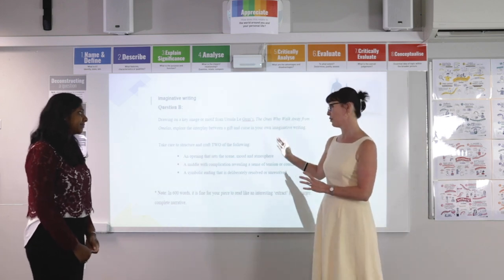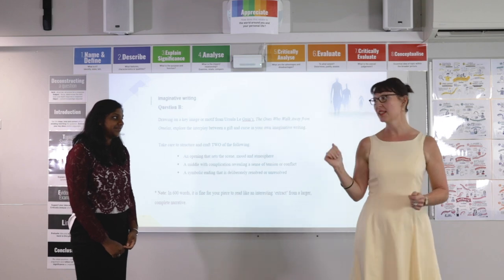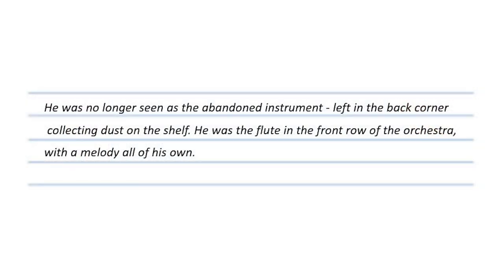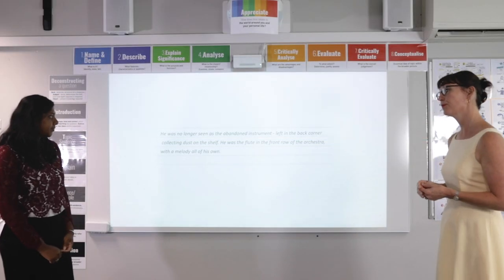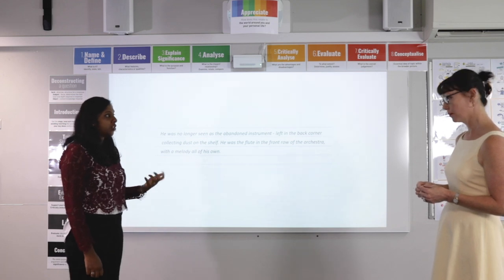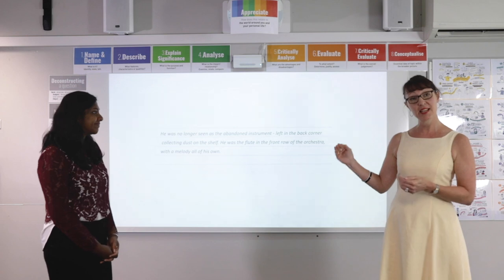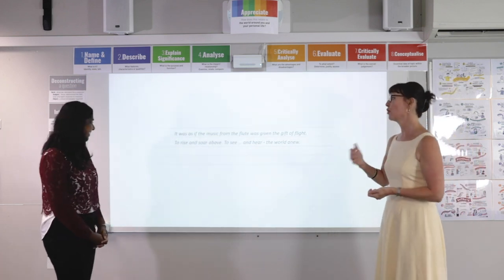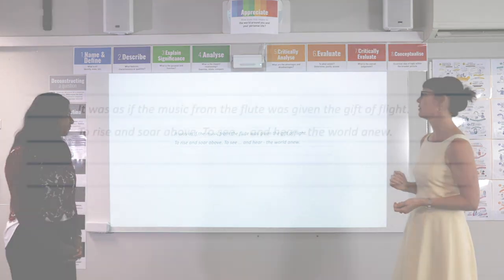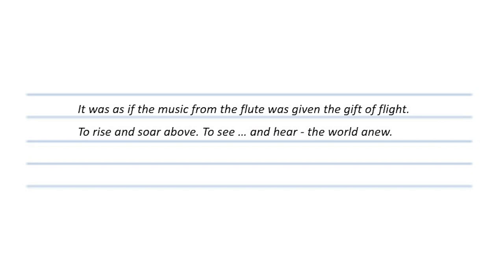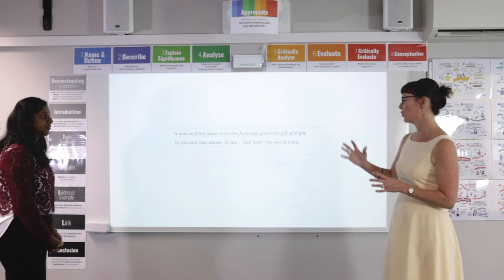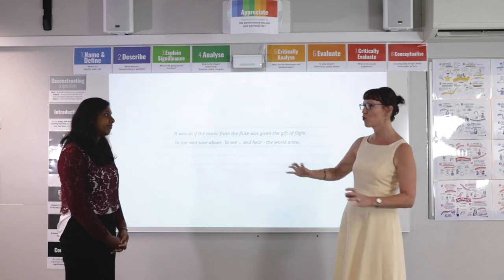To weave that in and draw out that idea of introversion, a strategy is to use metaphor and simile. An example of metaphor: 'He was no longer seen as the abandoned instrument left in the back corner collecting dust on the shelf. He was the flute in the front row of the orchestra with a melody all of his own.' That's the sophistication of language — showing not telling — and actually addressing the question. Metaphor really has that power of suggestion, not spelling it out. The second time a student might weave this flute metaphor in could be through simile: 'It was as if the music from the flute was given the gift of flight, to rise and soar above, to see and hear the world anew.' Notice that the way this is written uses truncated sentences and crafted punctuation to really draw those ideas out.